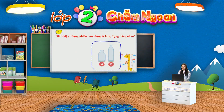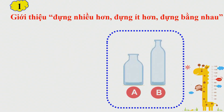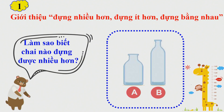Cô sẽ giới thiệu cho các em những cụm từ đựng nhiều hơn, đựng ít hơn và đựng bằng nhau. Các em hãy quan sát trên màn hình. Trên màn hình xuất hiện hai chai hoàn toàn không có nước. Và các em hãy cho cô biết xem chai nào sẽ đựng nhiều nước hơn. Bác gấu hỏi chúng ta rằng, thế làm sao để biết chai nào đựng nhiều hơn?